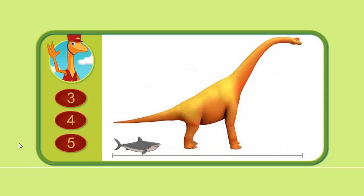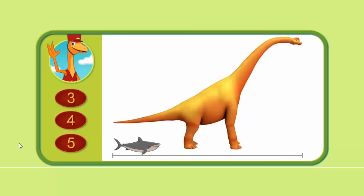Let's try another. About how many great white sharks long is this Brachiosaurus? 3, 4, or 5?